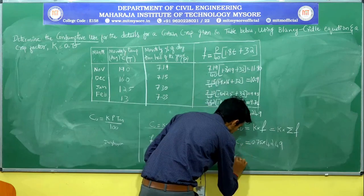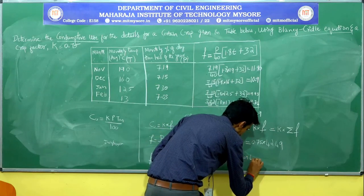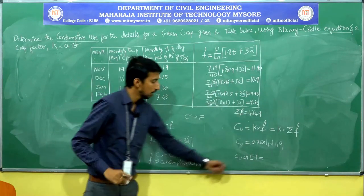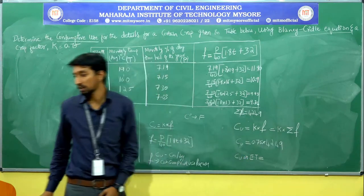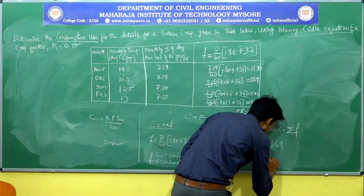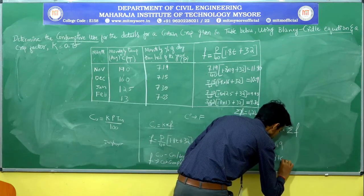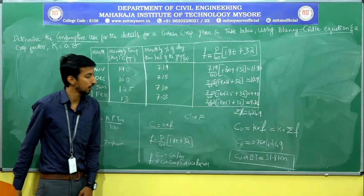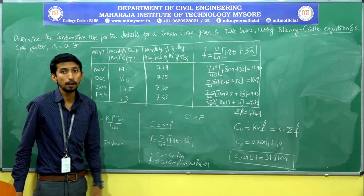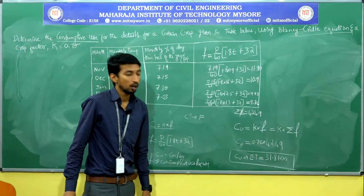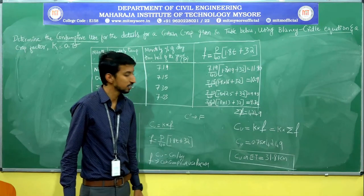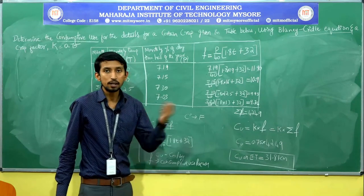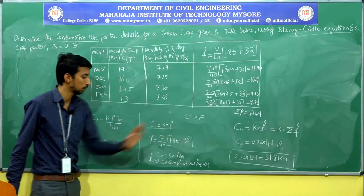You will get CU — the consumptive use or evapotranspiration — equal to 31.87 cm. This means 31.87 cm of water is evaporated or used: some is transpired by the plant and some is evaporated from the soil. This is the consumptive use.